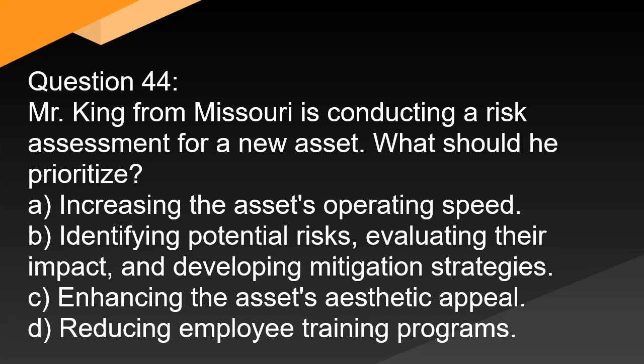Question 44. Mr. King from Missouri is conducting a risk assessment for a new asset. What should he prioritize? A. Increasing the asset's operating speed. B. Identifying potential risks, evaluating their impact, and developing mitigation strategies. C. Enhancing the asset's aesthetic appeal. D. Reducing employee training programs.